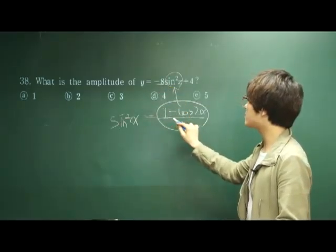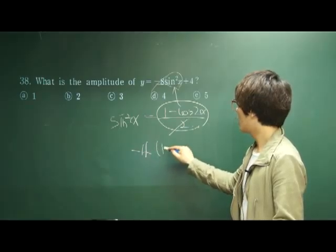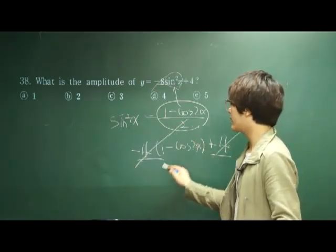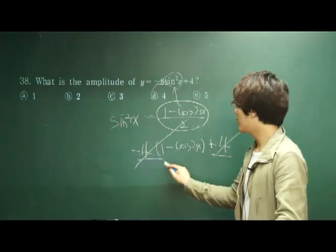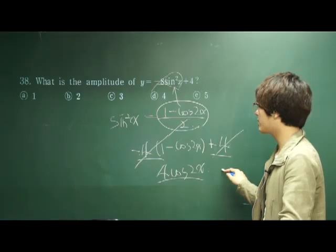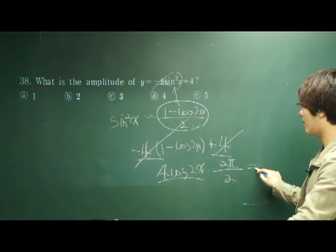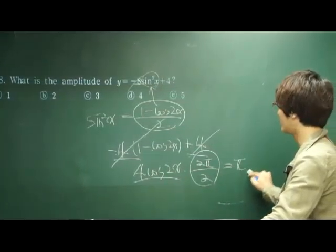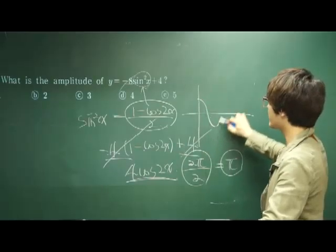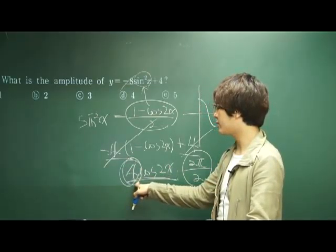Substituting gives us -8 times (1 minus cosine 2x)/2 plus 4, which simplifies to -4(1 minus cosine 2x) plus 4. The -4 and +4 cancel out, and -4 times -cosine 2x gives us 4·cosine 2x. The period is 2π divided by |b|; here b = 2, so the period is π. The amplitude is the coefficient in front — which is 4. So the amplitude is 4.